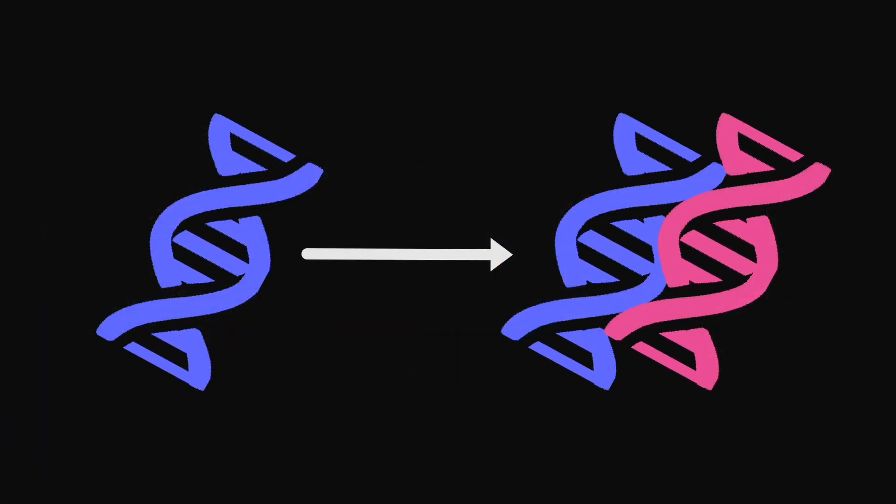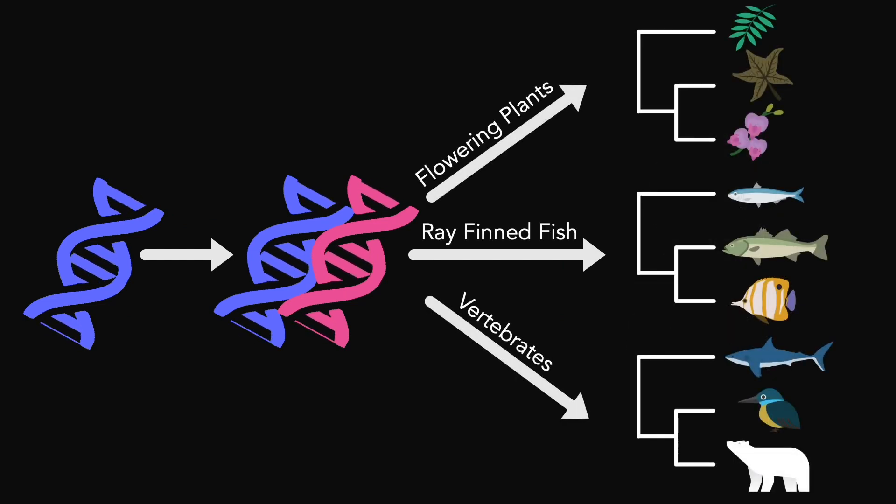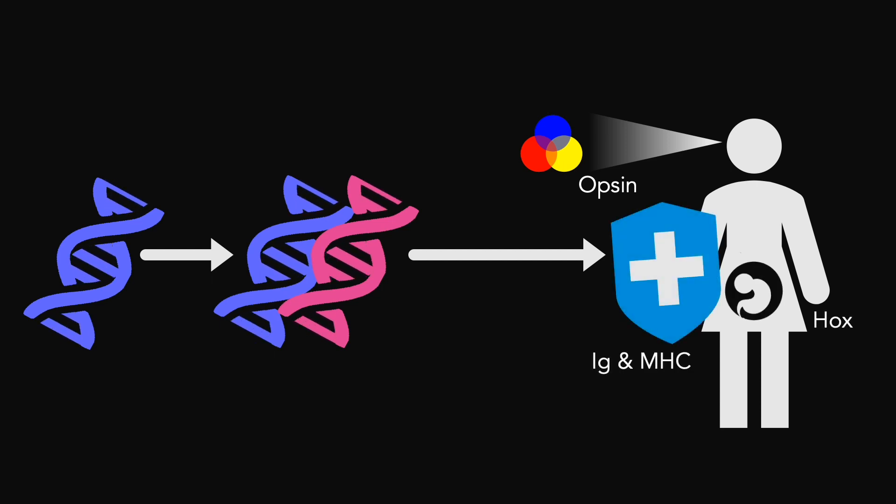Once considered to be evolutionary dead ends, whole genome duplication events have since been discovered in the ancestors of some of the most successful clades. As humans, we owe our color vision to a whole genome duplication, as well as our Hox genes and adaptive immune system.